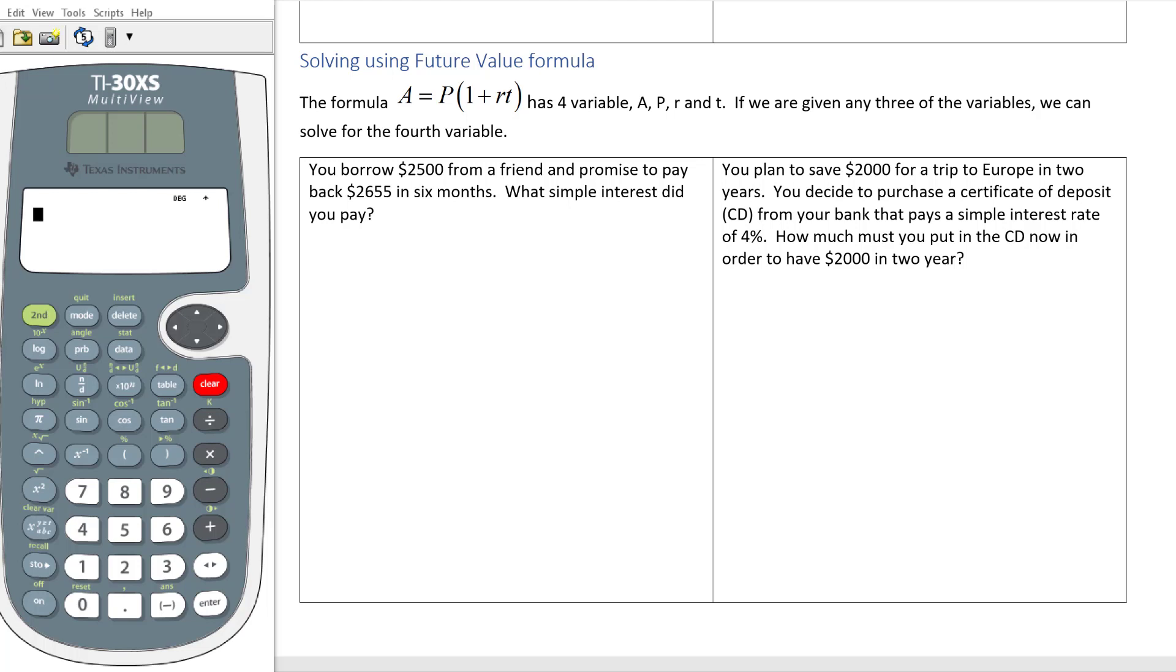On our first example, it says you borrow $2,500 from a friend and promise to pay back $2,655 in six months. What simple interest did you pay? I'm going to try to identify which number goes to which variable.